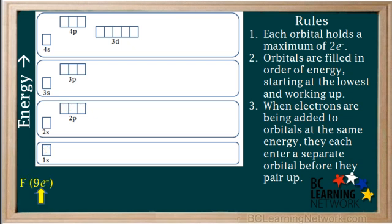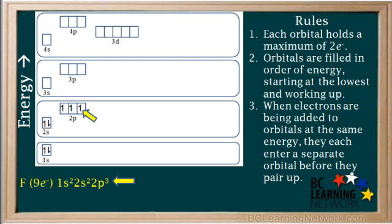The next element is fluorine, which has nine electrons in a neutral atom. The first two enter the 1s, the next two the 2s, then the 2px, the 2py, and the 2pz. That accounts for seven electrons so far, so we need to add two more. The eighth electron pairs up with the one in the 2px, and the ninth pairs up with the one in the 2py. So there's a total of five electrons in the 2p orbitals, and the electron configuration of fluorine is 1s², 2s², 2p⁵. Note that a fluorine atom would need to gain one electron to have a completely filled set of 2p orbitals. You might recall that a neutral fluorine atom readily gains one electron to form an F⁻ ion, or fluoride ion. We see that electron configurations can often be used to explain many properties of elements.